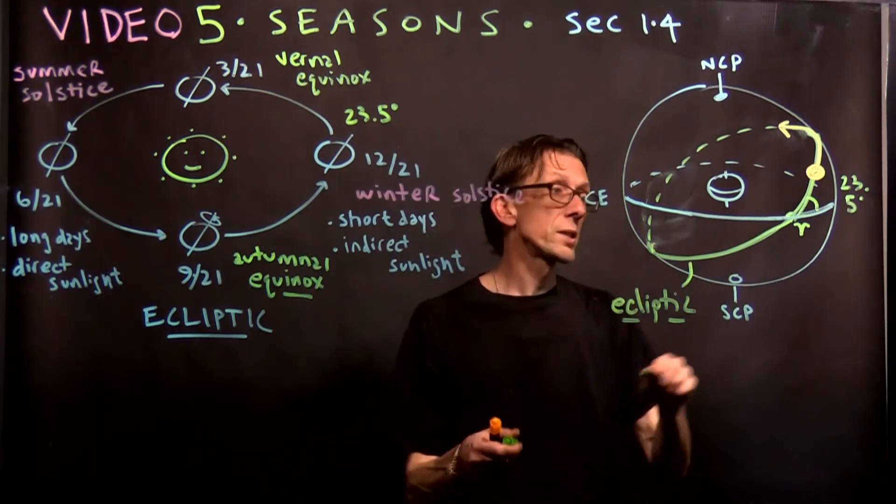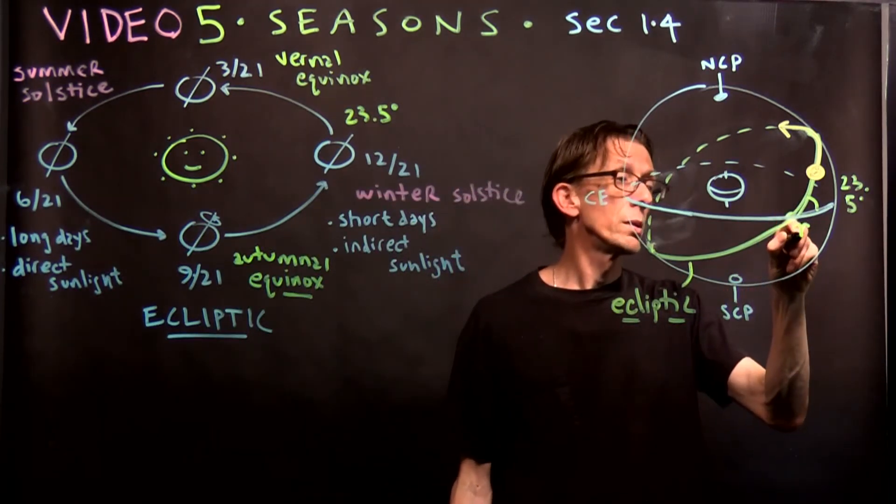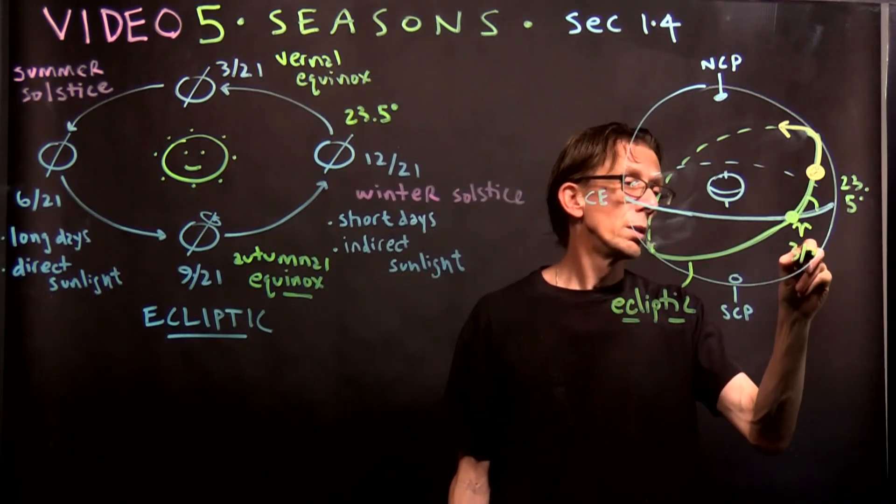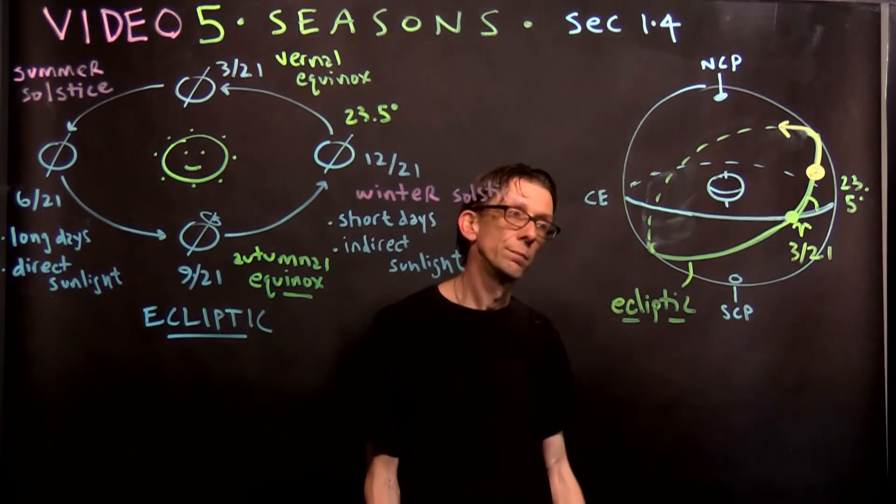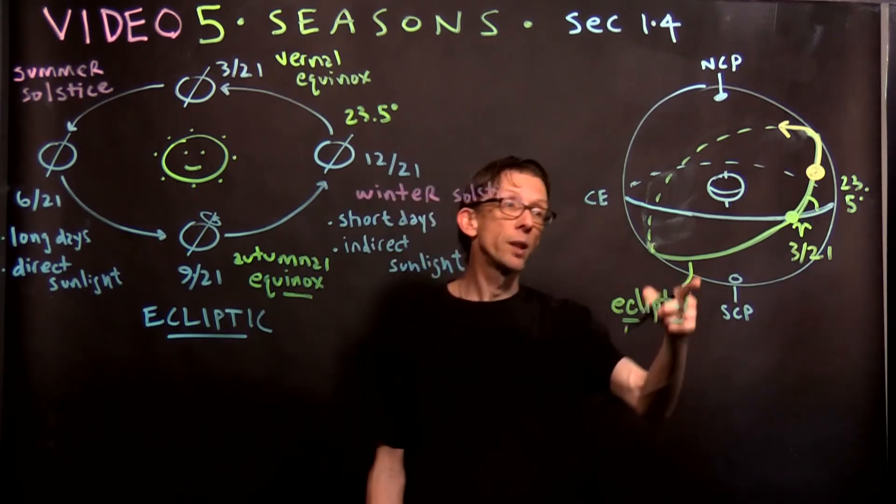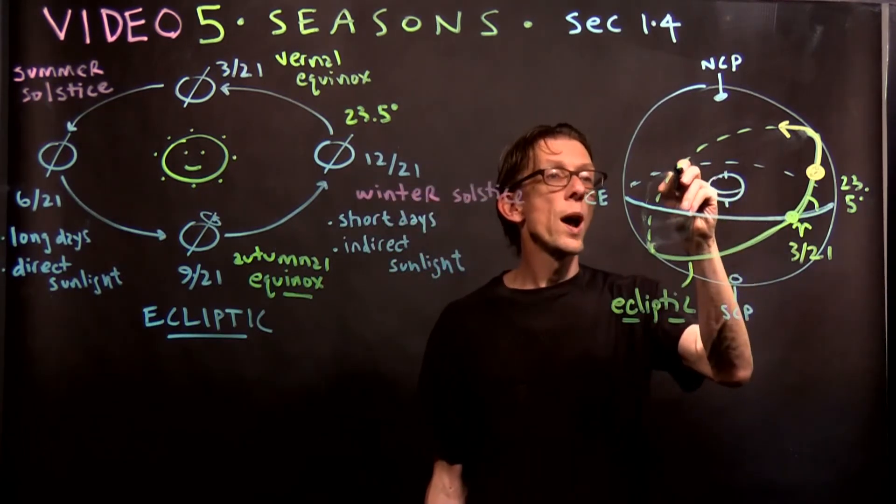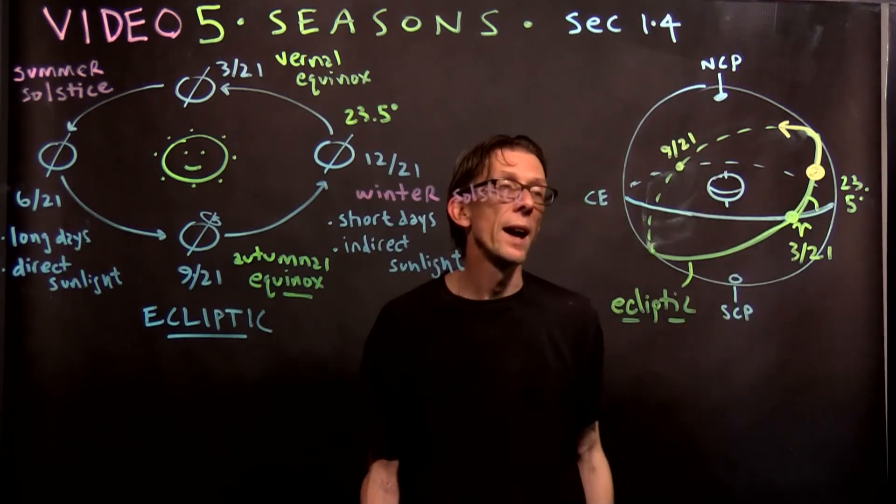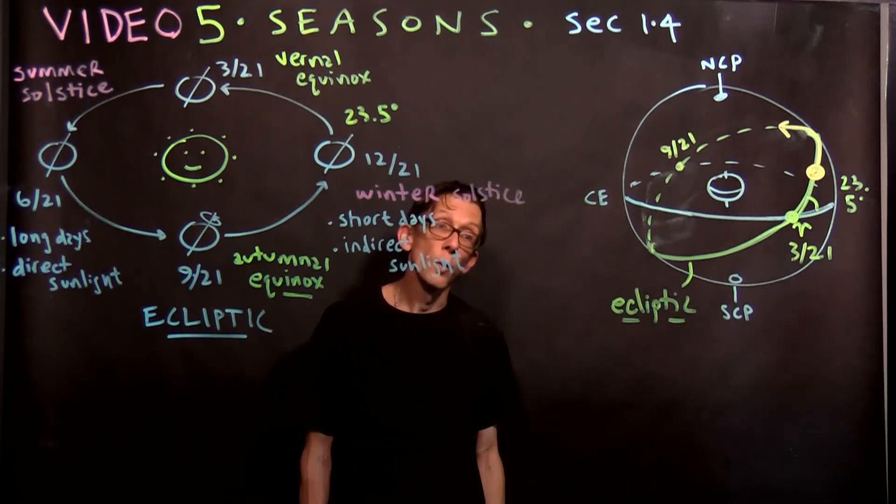So now we have two circles, two big circles on the celestial sphere that are important. The celestial equator, which is what you get when you project the Earth's equator out onto the celestial sphere. But we also have this tilted circle known as the ecliptic. And throughout the course of a year, the Sun appears to crawl around that circle. And the vernal equinox, this little point here that we talked about earlier, that's where the Sun is on 3/21.